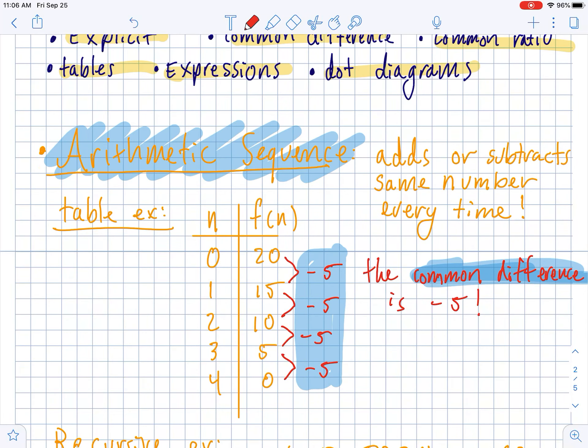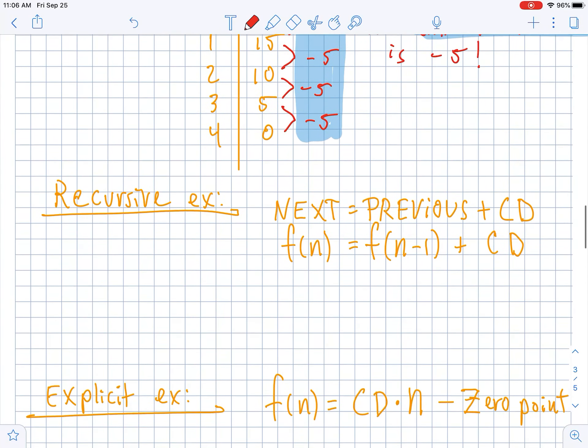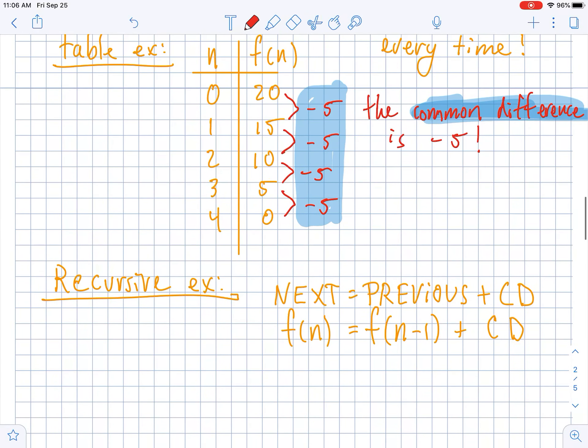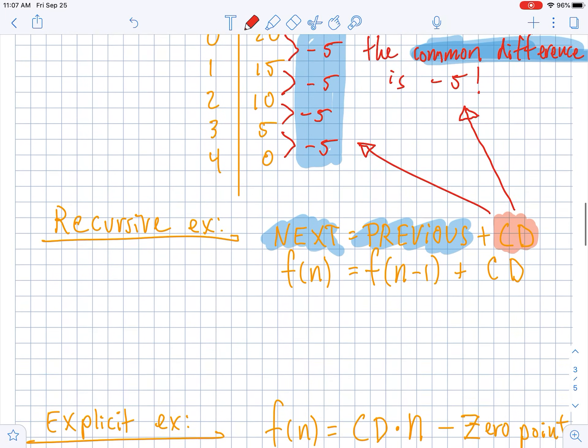So common differences are always used when describing an arithmetic sequence. Let's take that same sequence of 20, 15, 10, 5, 0, and talk about how to express it recursively. You guys, a recursive equation always uses a previous term. So to find the next term in the function, you take the previous and multiply it by the common difference. So the common difference right here in this particular problem is going to be negative 5 because that's how it was changing.